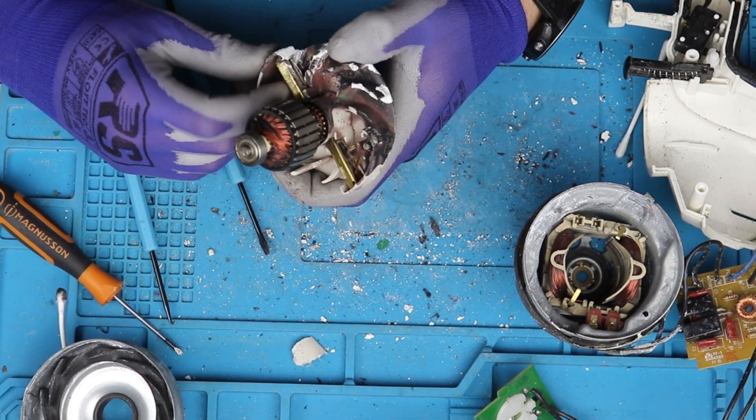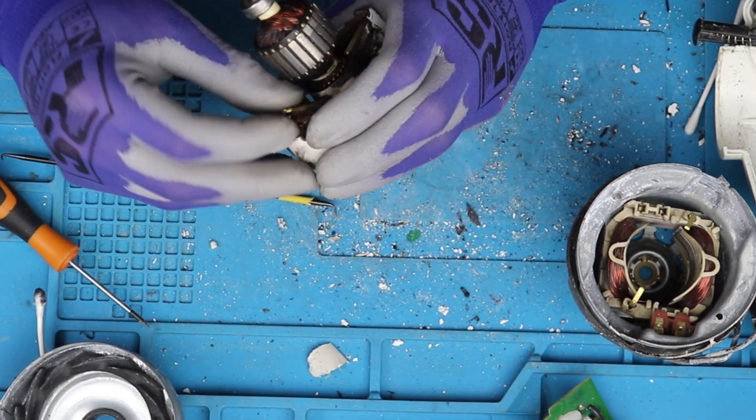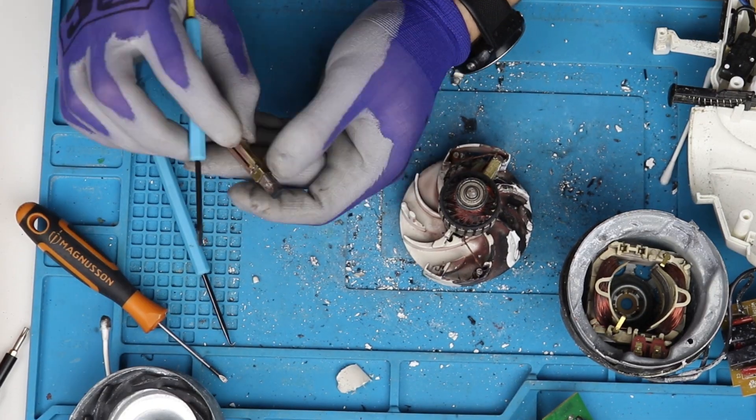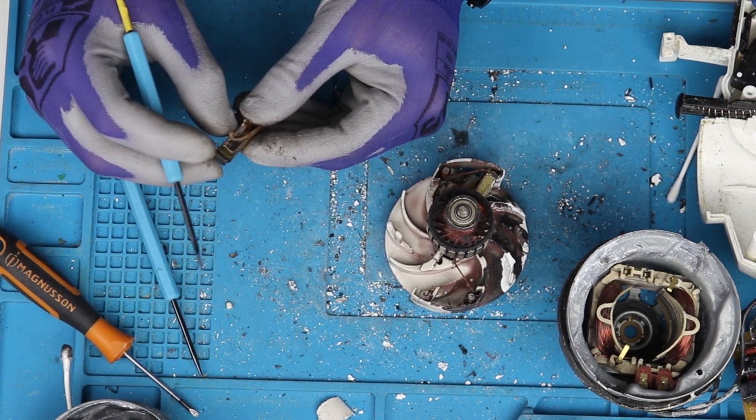I push the retaining spring to the side and remove the brush assembly. I then scrape the excess paint and as you can see, the brush now moves freely.